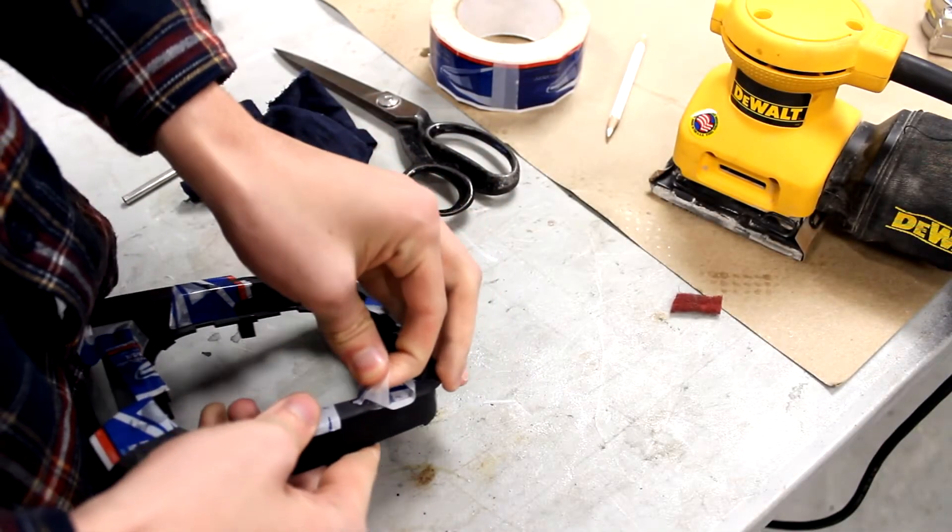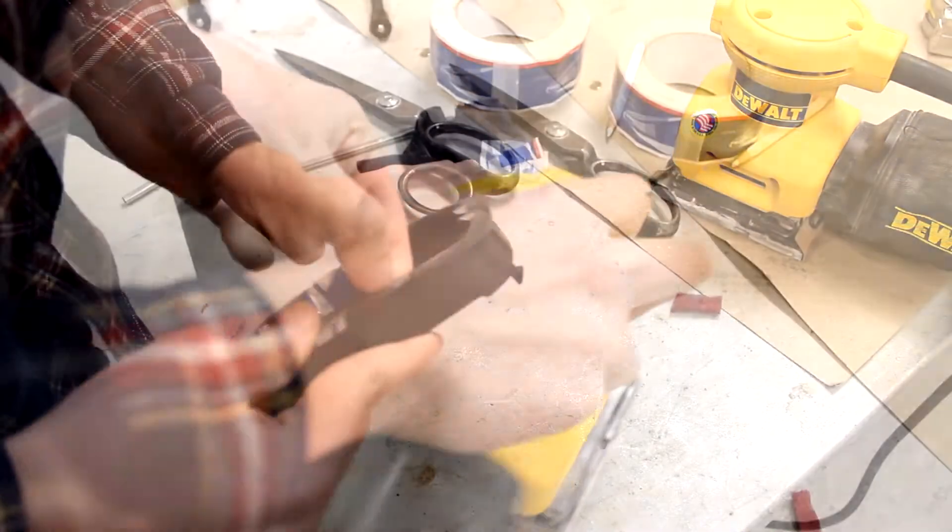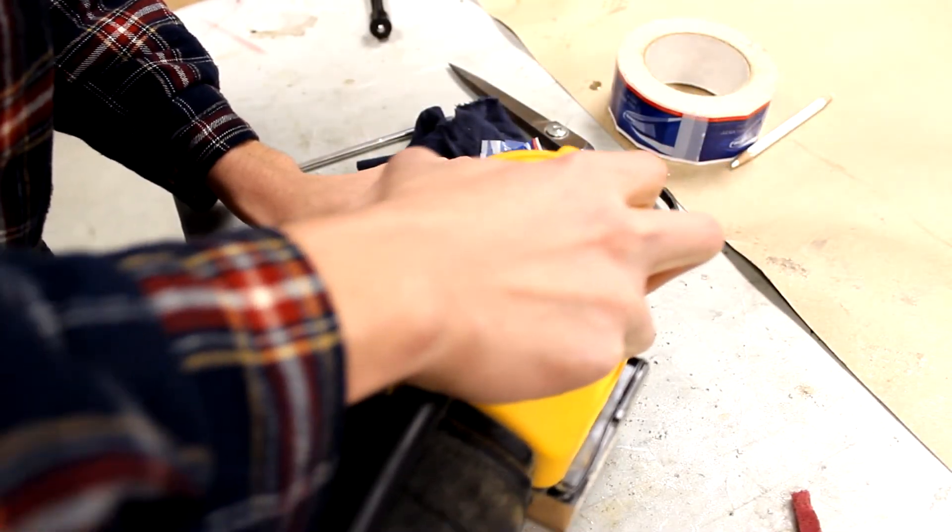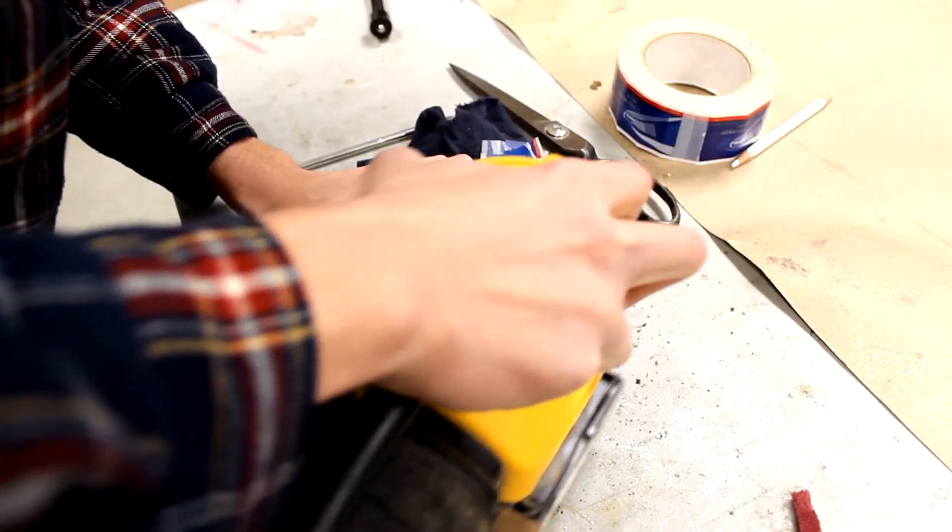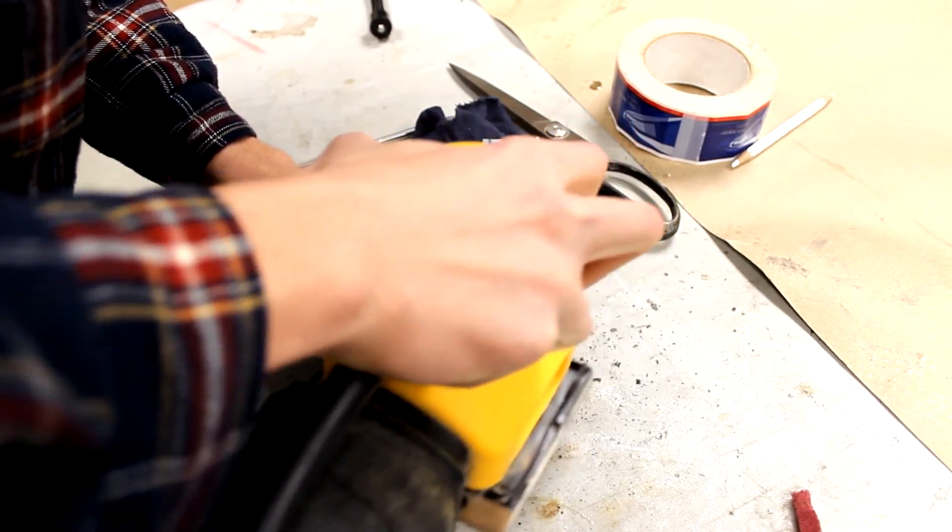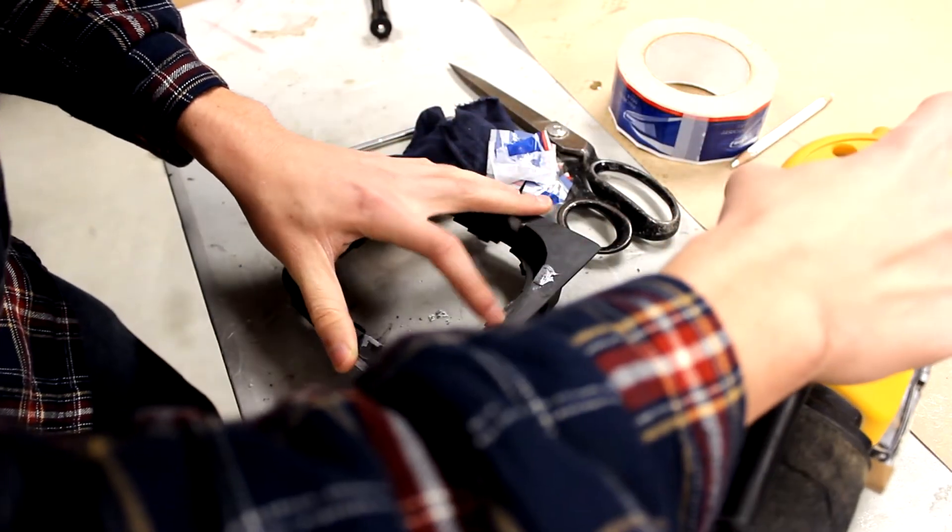Once everything's all dry, you could go ahead and pull off all your tape. Then use your palm sander to begin shaping back the epoxy. While doing this, try to make sure that the epoxy matches the profile of the trim, leaving a perfectly smooth transition.